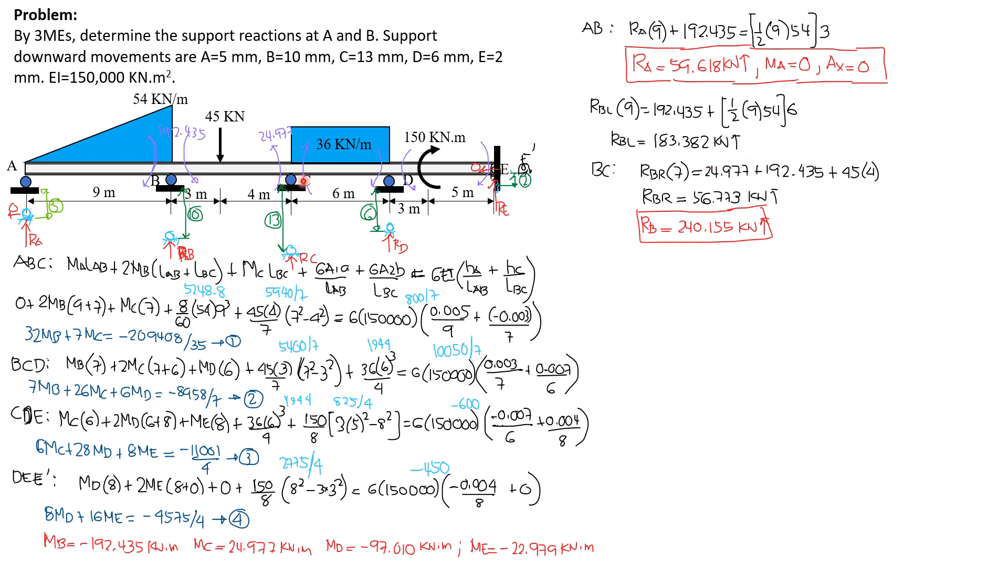Then considering BC, assuming RB right is positive, summation moment C equals 0, that's clockwise, then the moments of the given moments and the load are counterclockwise. So RB right times 7 equals 24.977 plus 192.435 plus 45 times 4. So RB right is 56.773 kN upward.